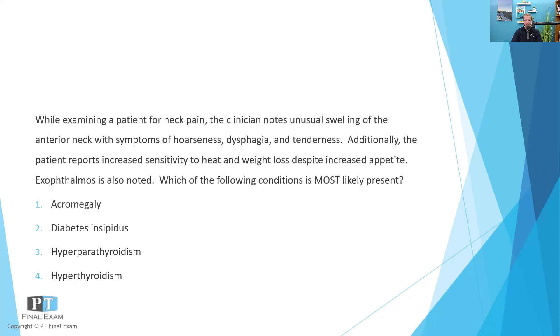Option one: acromegaly. Two: diabetes insipidus. Three: hyperparathyroidism. Four: hyperthyroidism. So we've got acromegaly, diabetes insipidus, hyperparathyroidism, and hyperthyroidism.